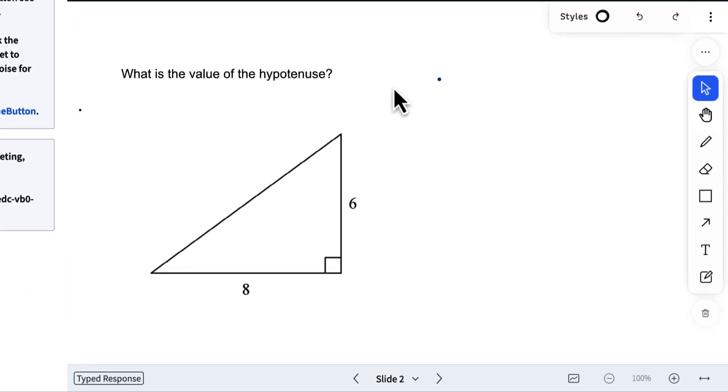This is BigBlueButton's new whiteboard. By default, you have a pointer so students can see exactly where you're pointing.